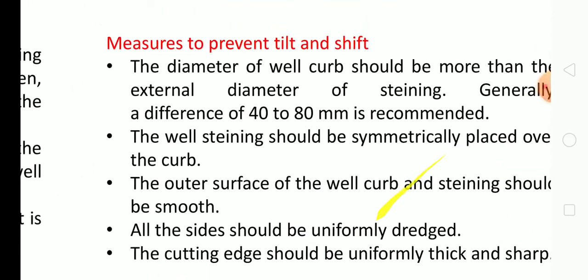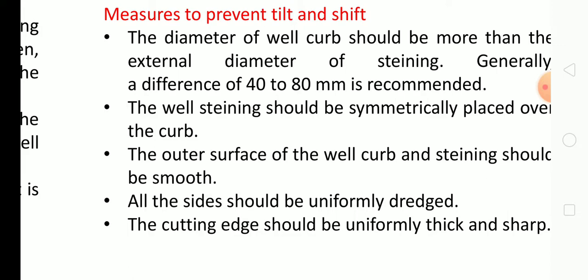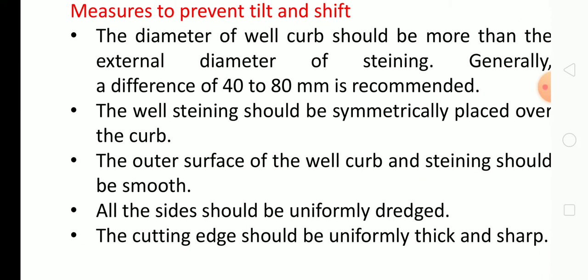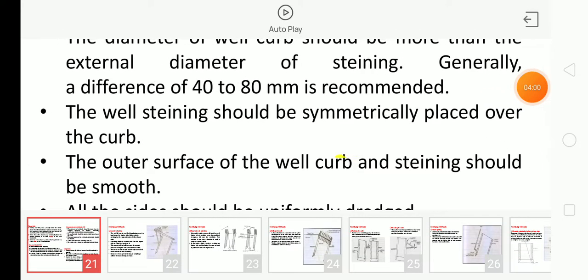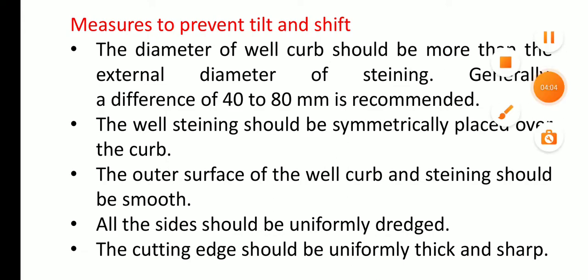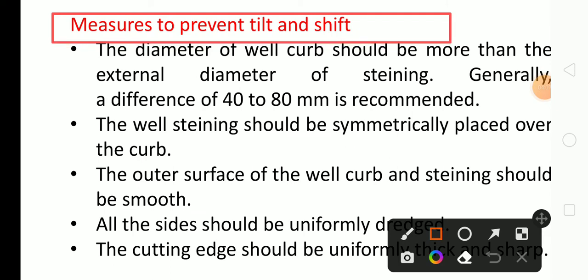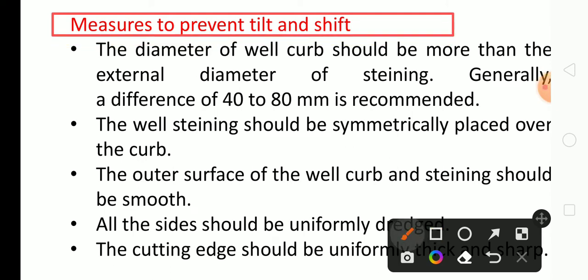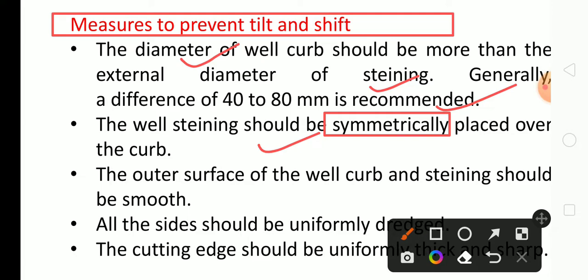Now we will see the measures to prevent tilt and shift. The diameter of the well curb should be more than the external diameter of the steining — generally a difference of 40 to 80 mm is recommended. The well steining should be symmetrically placed over the curb; during placing of the curb it should be placed symmetrically. The outer surface of the well curb and steining should be smooth.